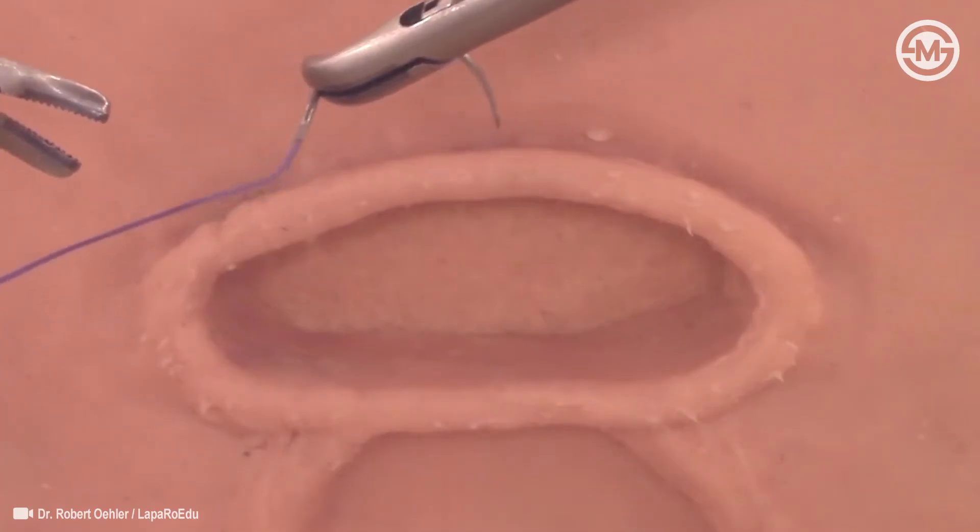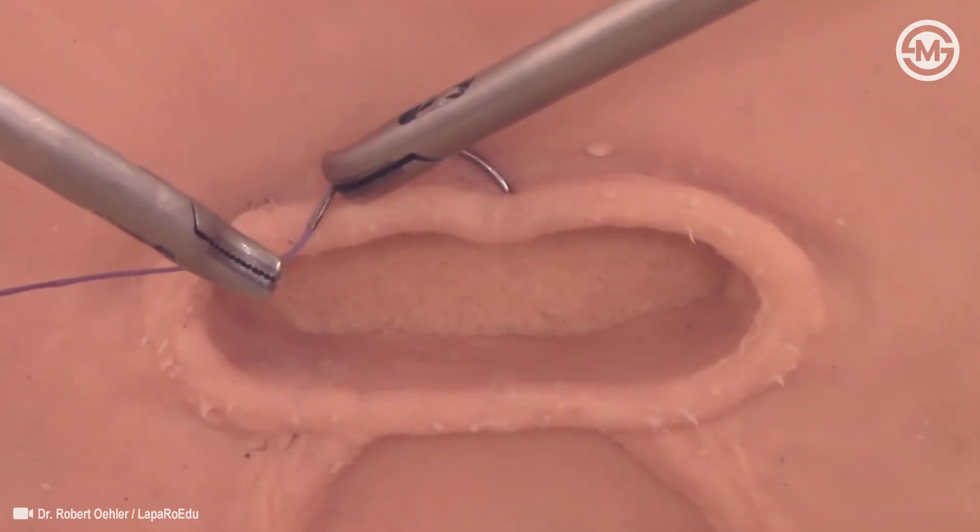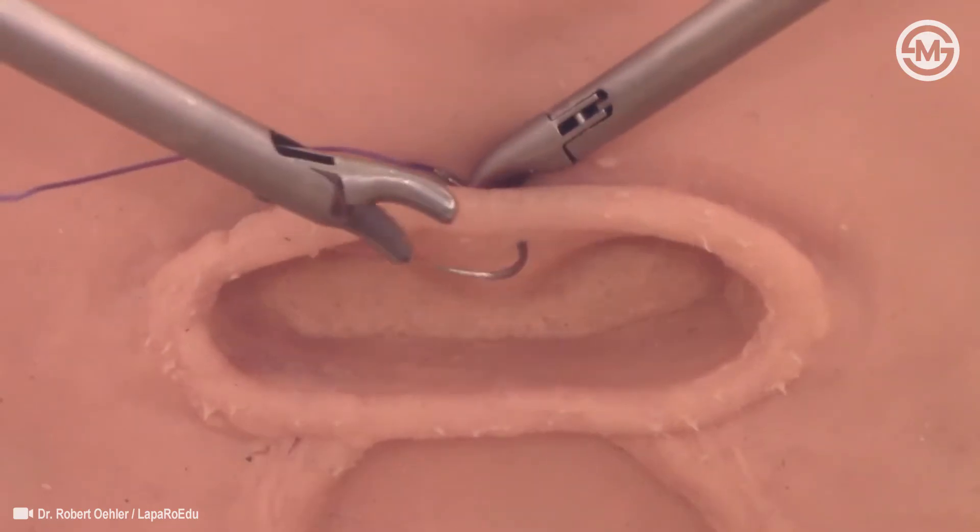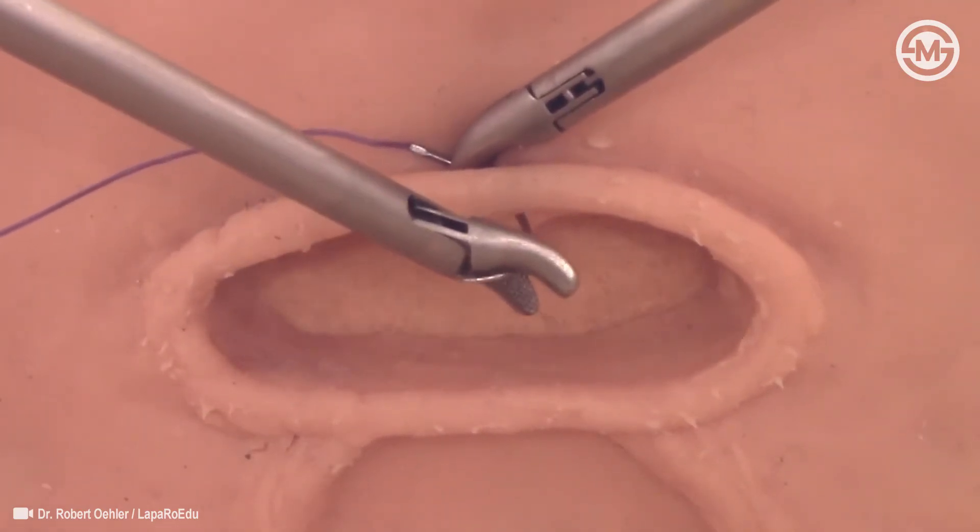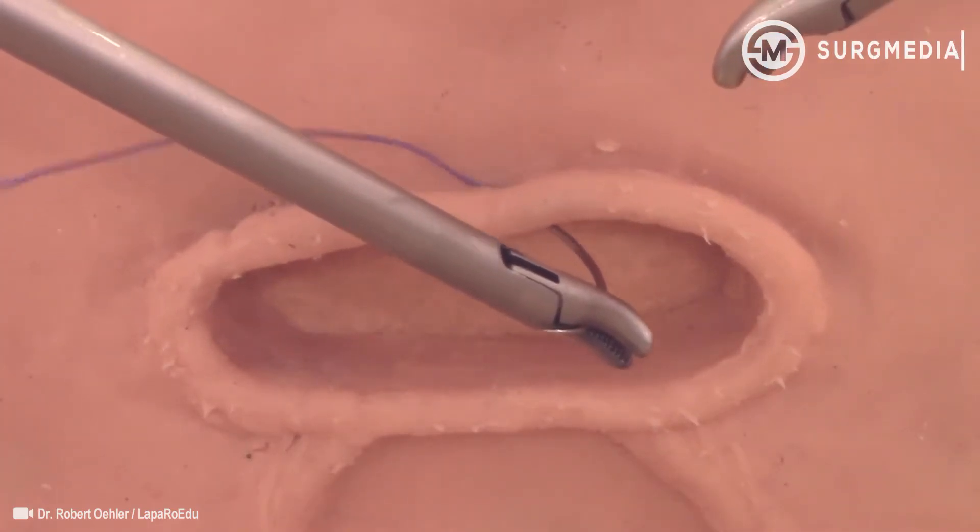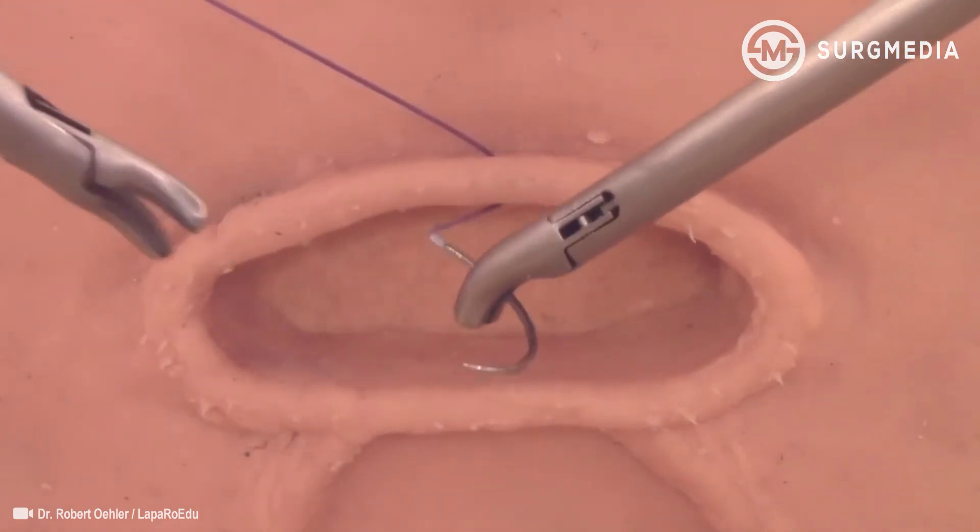The entry angle of the needle tip into the tissue should be 90 degrees. Advancing the needle through the tissue and rotating the needle driver creates a transmural stitch with the exit point in the anterior vaginal skin. Now the left needle driver takes the needle parallel to the needle plane and completes the first stitch. The right needle holder can re-grasp the needle, which will still be in the correct orientation.